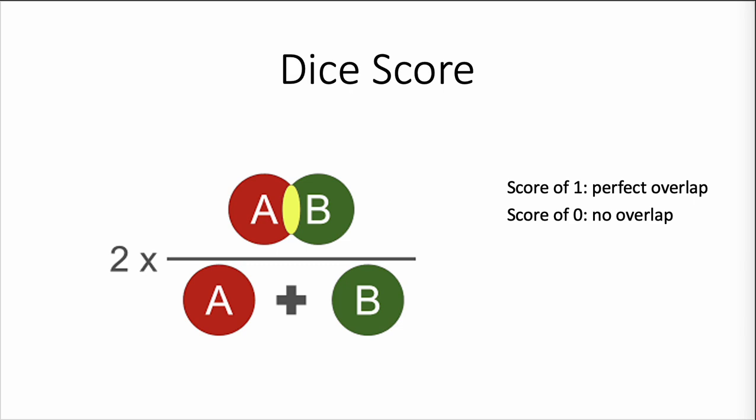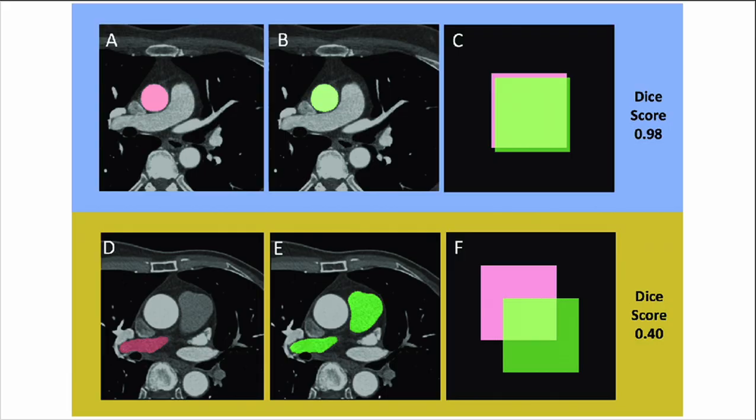The most common application for this is brain segmentation. Here we can see an example of some medical imaging data. With the top example, the one in blue, you have a dice score of 0.98, and on the bottom you have a dice score of 0.4. So why is this significant?